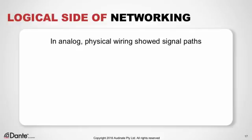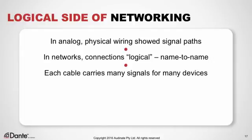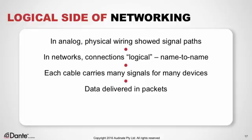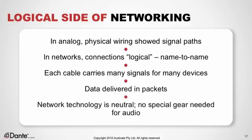Let's now think about the logical side of networking. This area is a bit harder to grasp — it's not physical. In analog systems, the wiring diagram went a long way towards explaining what the system does. Channels were physical cables that went from outputs to inputs. But in networks, the actual connections are logical — they exist in software. When devices are connected on a Dante network, they communicate to one another by sending data from name to name, connected by software. Network cables are carrying lots of signals for lots of different devices — the wiring doesn't tell you what the signals are or where they're going. Networking delivers data in packets that are addressed and sent to destinations, and that data is reassembled at the destination. Modern networking technology is neutral to the type of data being transported — there's no need for special audio networking equipment. Ordinary IP gear is absolutely fine.